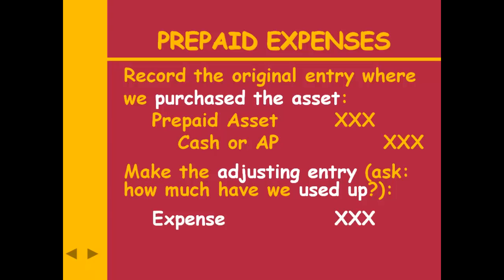So here's my first adjusting entry: it is a debit to an expense and a credit to an asset — debit to an expense and credit to an asset. That entry is on page six of your handout. I would highlight it, put a star by it, because that is our first adjusting entry we need to learn.